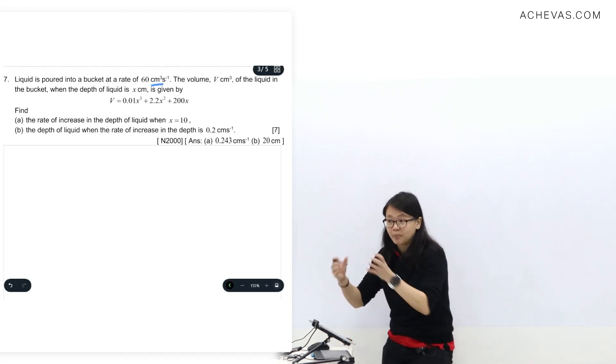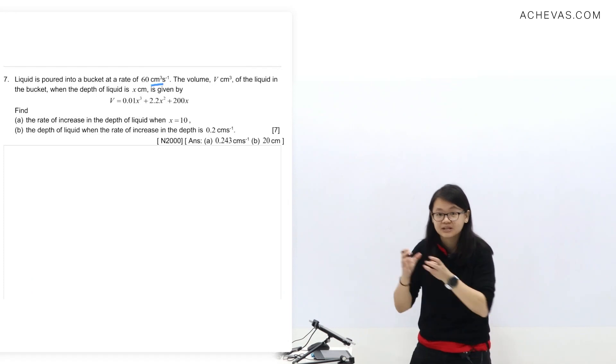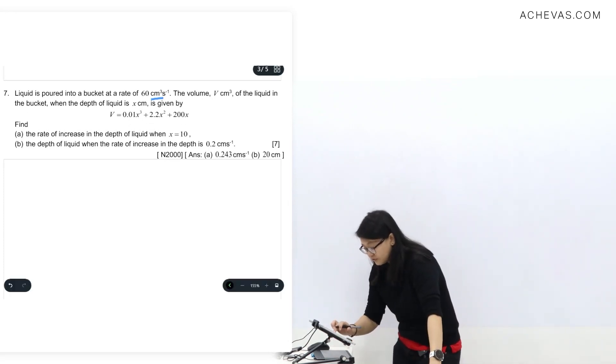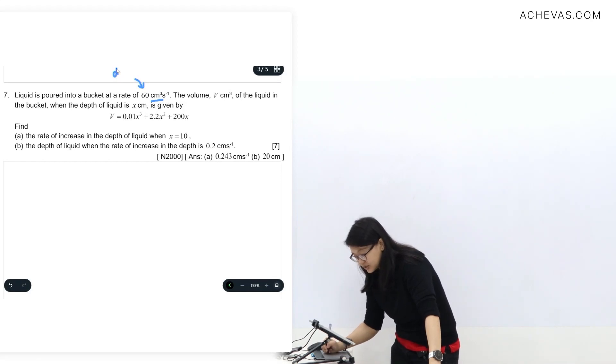So this one is actually volume. Imagine I pour liquid with this rate - that means the volume is flowing at this rate. For this question, it's just to understand that this is dV/dt. There's no volume written in front. Another clue is from the unit - you will know that's the 60.